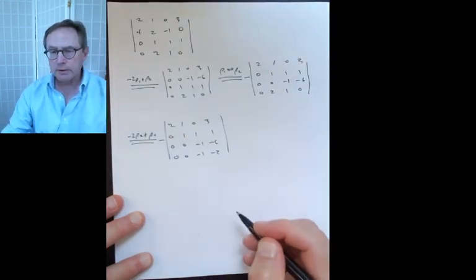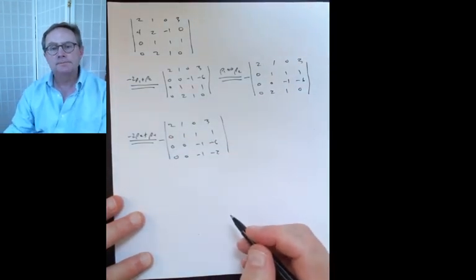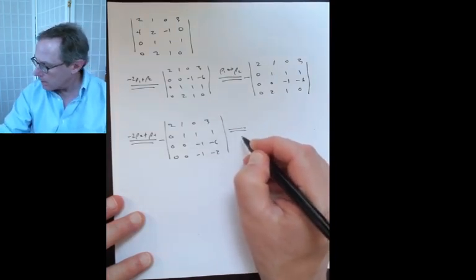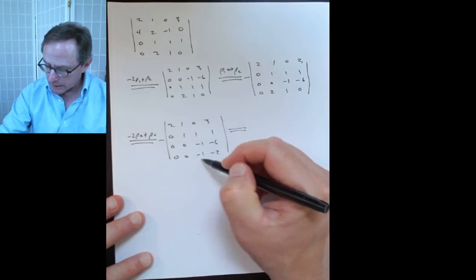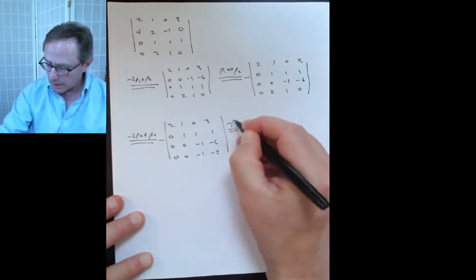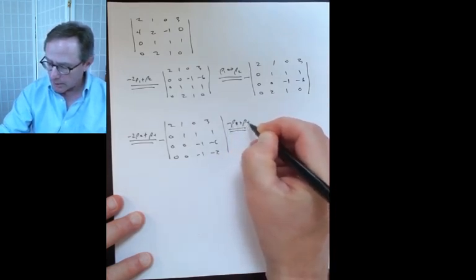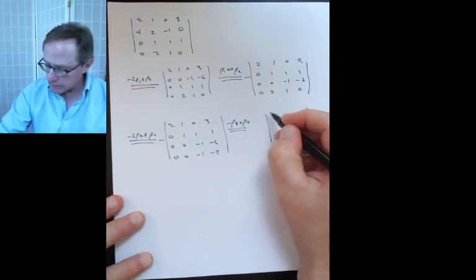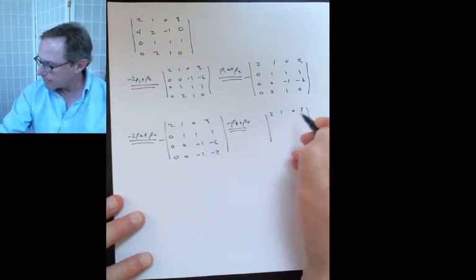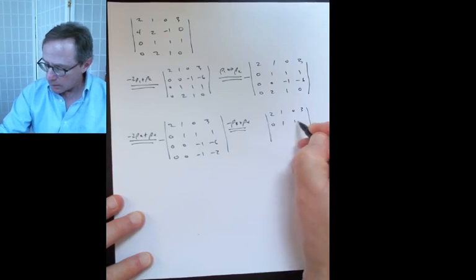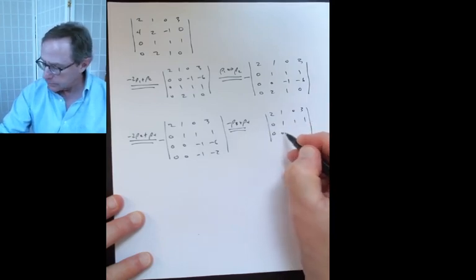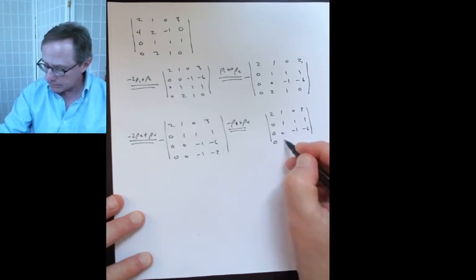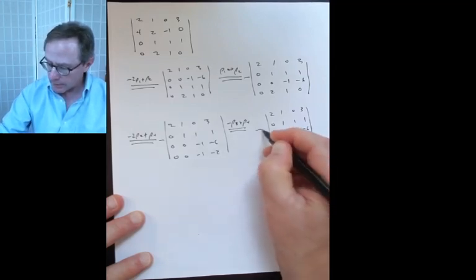Don't forget to carry the minus sign onto the next line. Finally, use the −1 to eliminate the −1 below: −1 times row 3 added to row 4 gives row four as 0, 0, 0, 4. Don't forget the minus sign carried throughout.